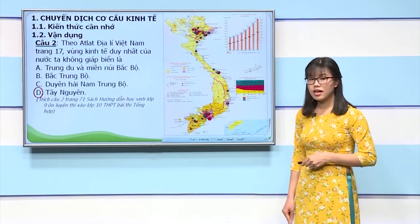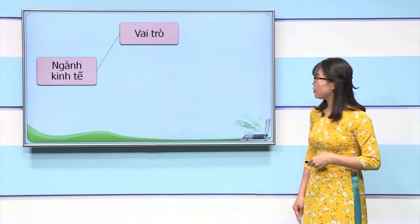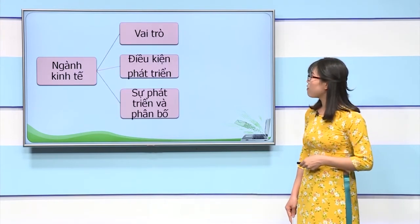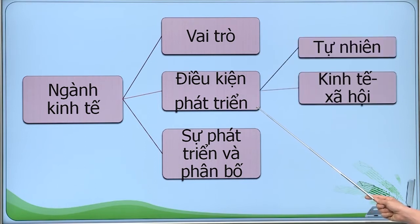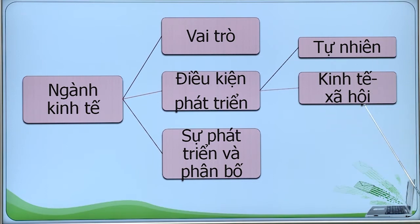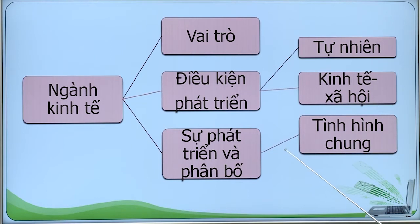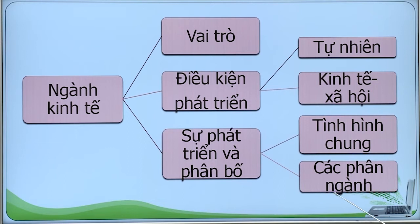Chúng ta chuyển sang nội dung thứ 2 là tìm hiểu về các ngành kinh tế. Để việc ôn tập phần này được hiệu quả, cô hướng dẫn các em cấu trúc khi tìm hiểu về một ngành kinh tế. Chúng ta cần phải tìm hiểu 3 vấn đề: thứ nhất là vai trò, thứ hai là điều kiện phát triển, và thứ ba là sự phát triển và phân bố. Về điều kiện phát triển, chúng ta phải phân tích ở hai nhóm: điều kiện tự nhiên và điều kiện kinh tế xã hội.